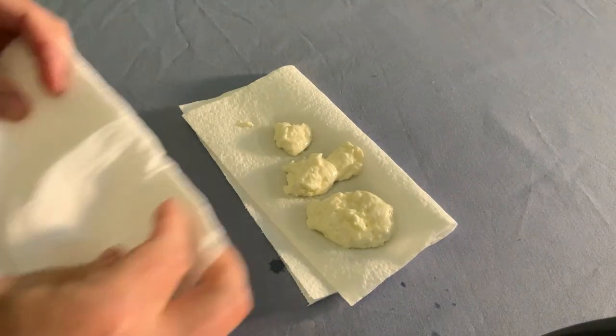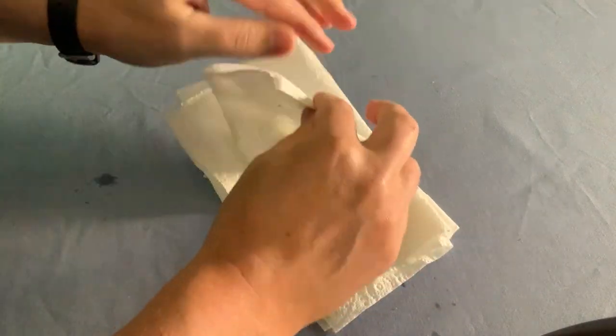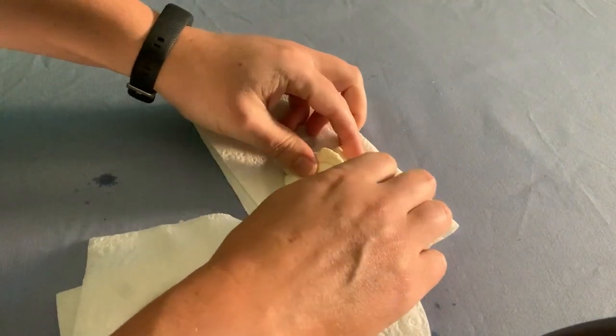We want to use the paper towel to squeeze out as much liquid as we can and then start bringing our plastic together.